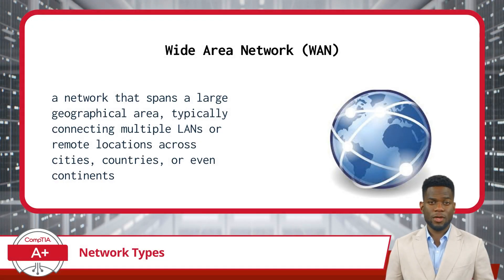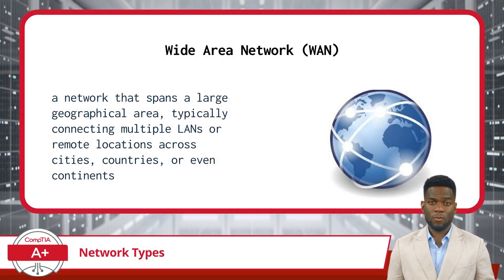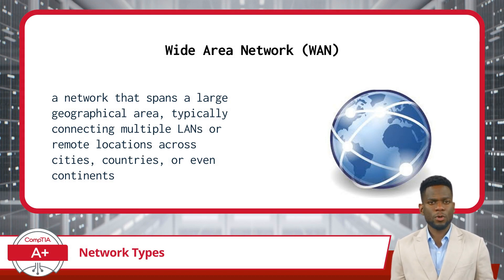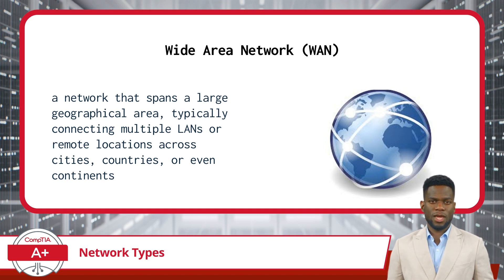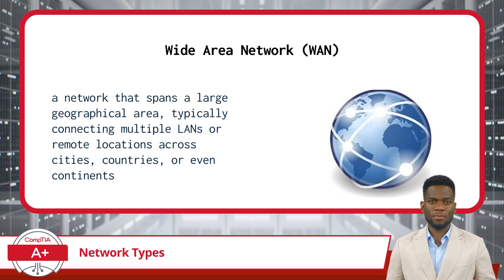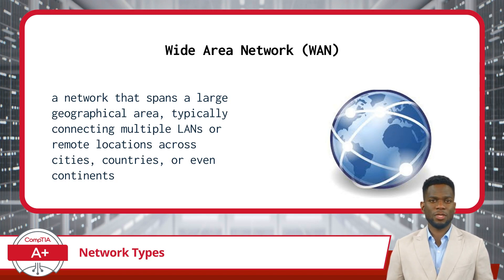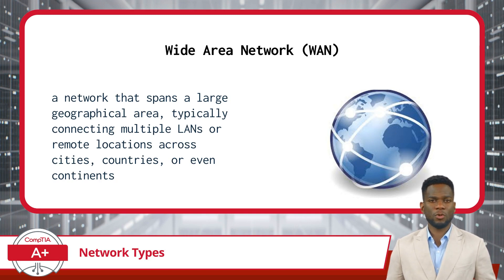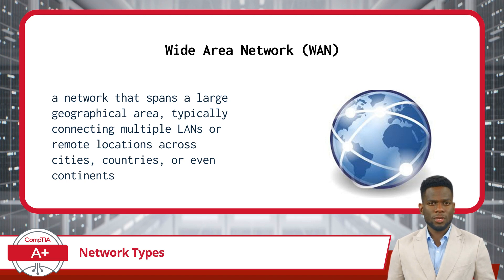Now, let us expand our horizon to Wide Area Networks, or WANs. WANs cover a much larger area than LANs or WLANs. A WAN is a network that spans a large geographical area, typically connecting multiple LANs or remote locations. WANs are used to connect networks across cities, countries, or even continents. They enable long-distance communications and data exchanges between geographically dispersed sites. The Internet itself can be considered a massive WAN, connecting networks worldwide.